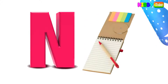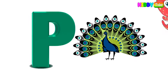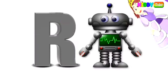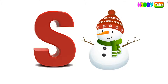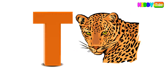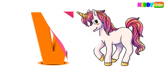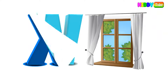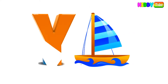O for octopus, P for peacock, Q for queen, R for robot, S for snowman, T for tiger, U for unicorn, V for van, W for window, X for x-ray, Y for yacht, Z for zipper.